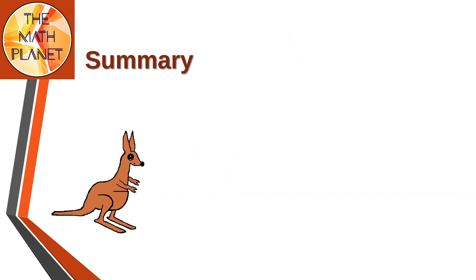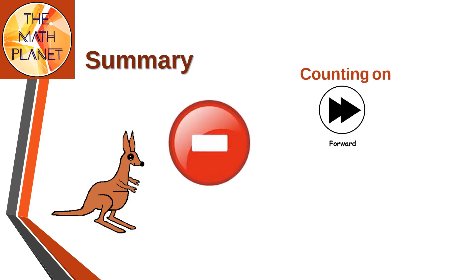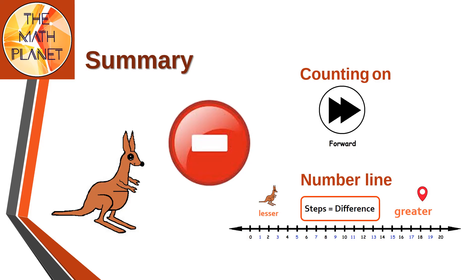To sum up what we learned for today's lesson, today we learned how to perform subtraction by counting on using a number line. In order to do so, I mark the start point at the lesser number in the subtraction equation and mark the end point at the whole, which is the greater number in the equation. Then, I count the number of steps from the start point to the end point, and this will be the difference.